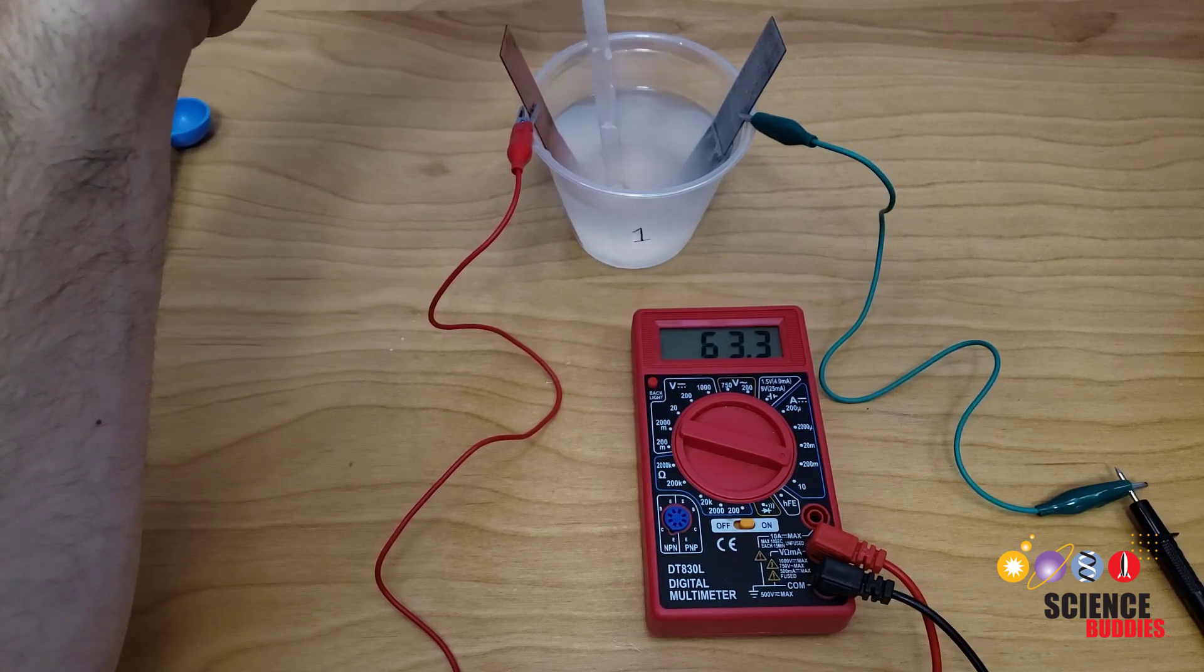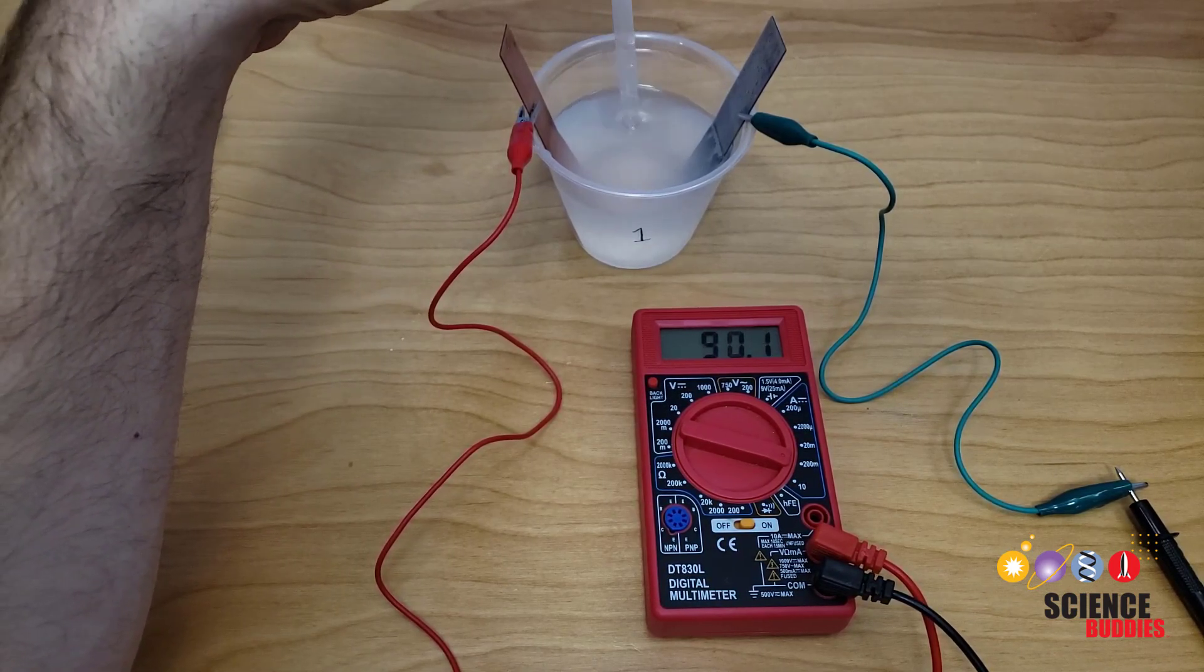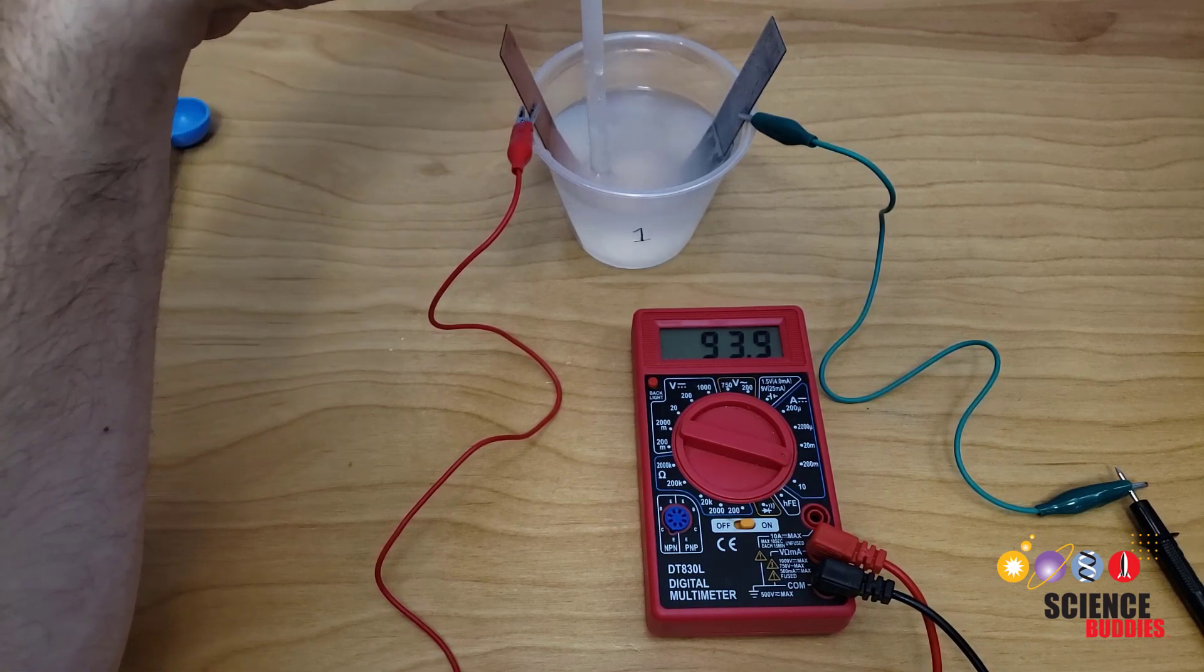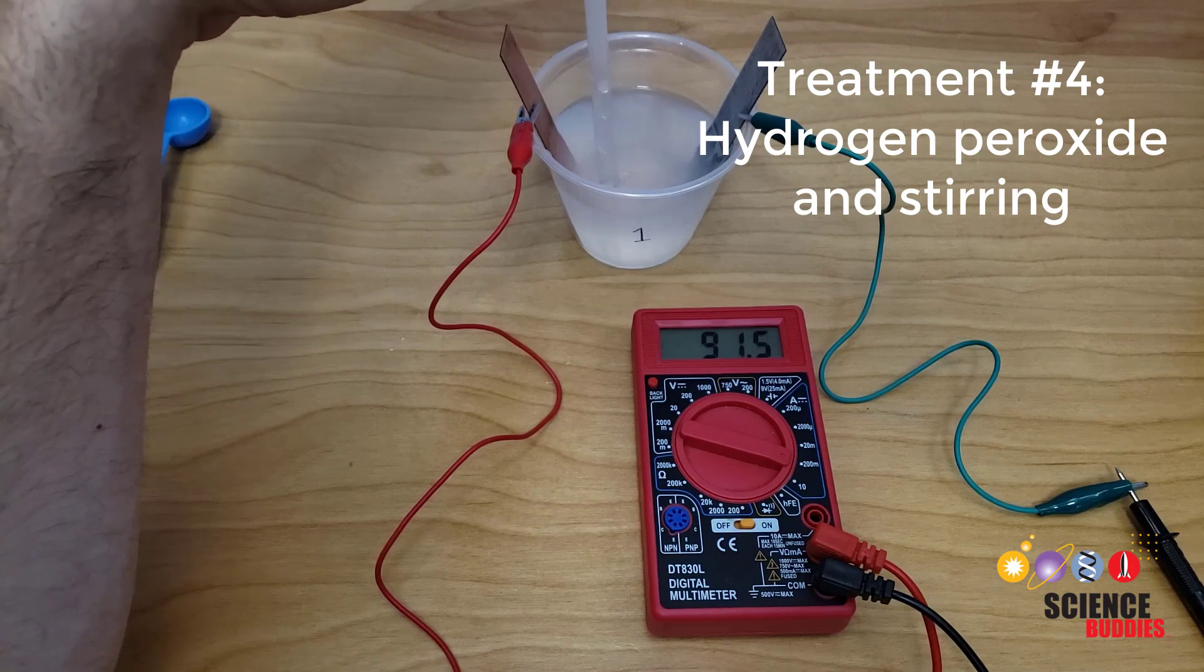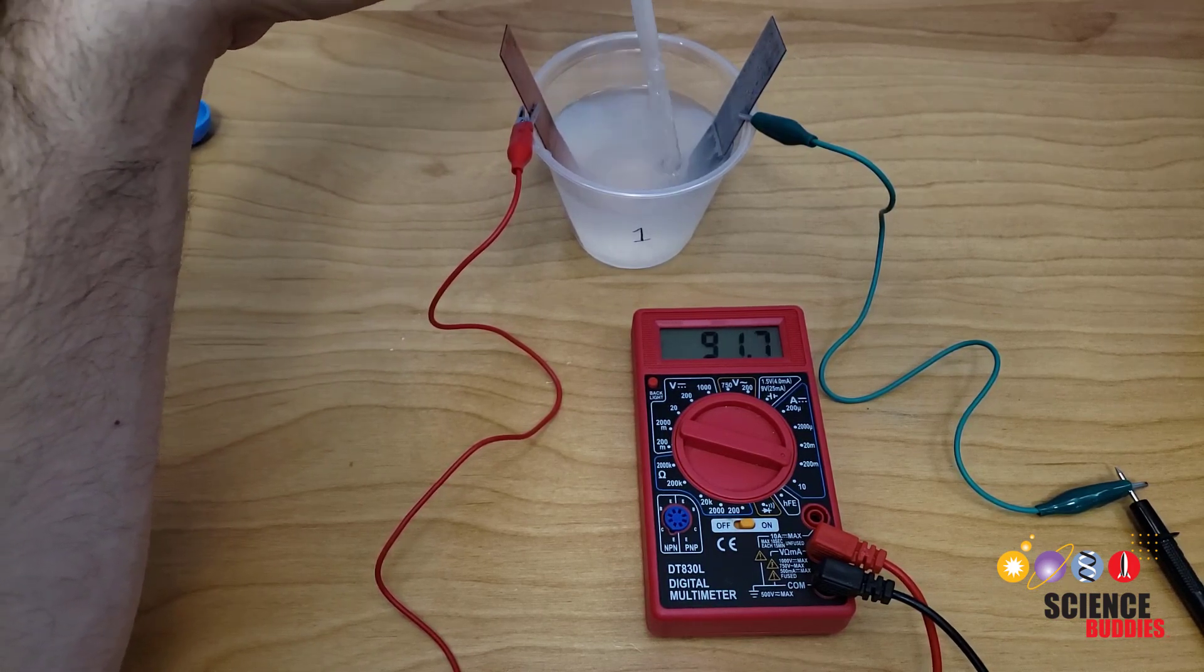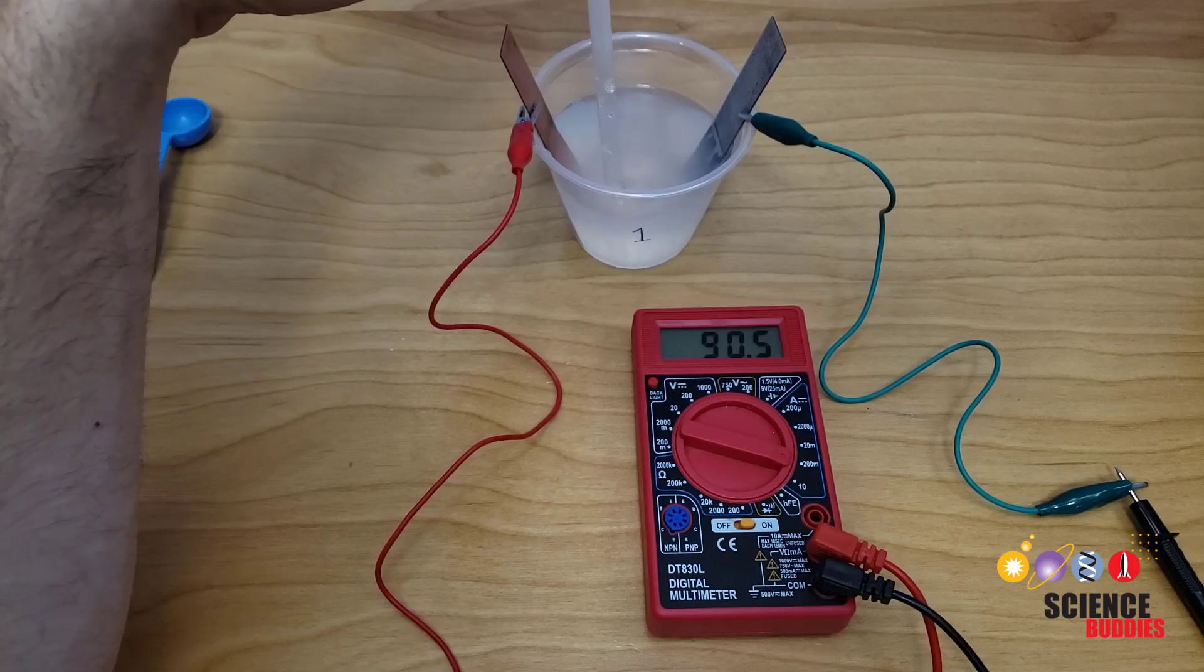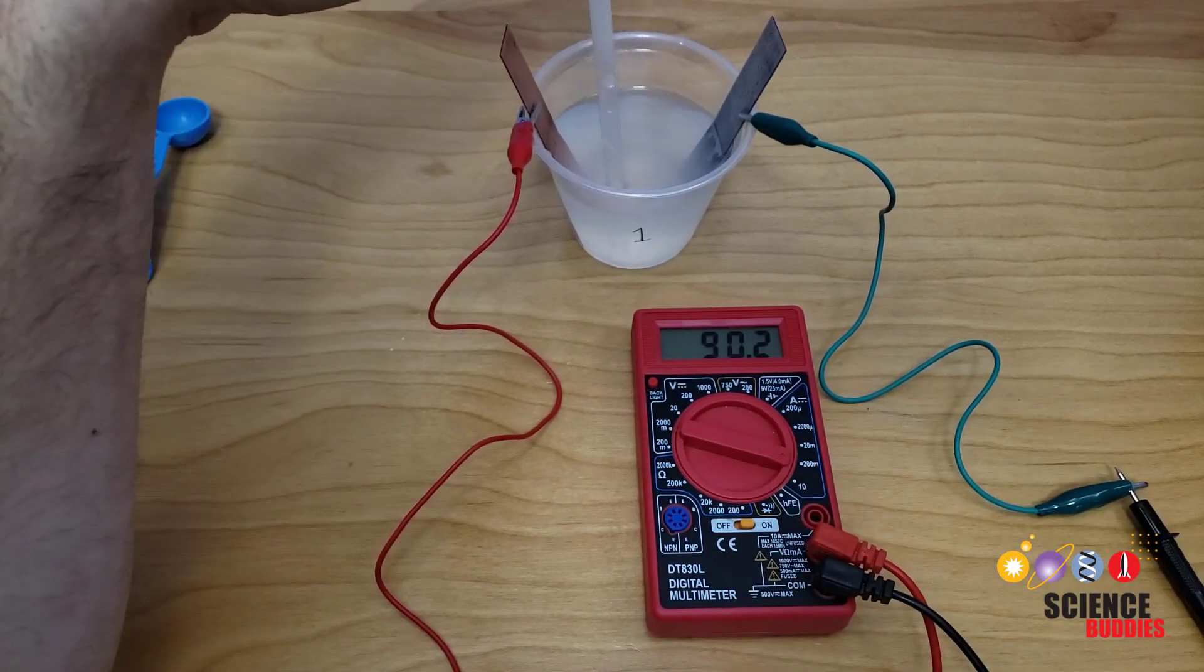After you've waited for the current reading to stabilize a final time, you're ready to try your final treatment, a combination chemical and mechanical treatment. Try continuously stirring your battery now that you've added the hydrogen peroxide. Again, stir for three minutes, record the initial current, the final current, then switch over to DC voltage, and record the open circuit voltage.